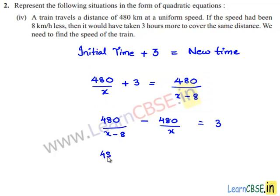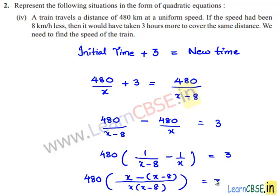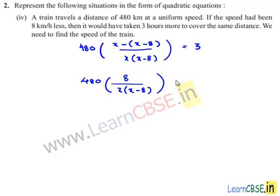Rearranging: 480 divided by (x minus 8) minus 480 divided by x equals 3. Taking 480 as common: 480 times (1/(x minus 8) minus 1/x) equals 3. The LCM is x times (x minus 8), giving 480 times (x minus (x minus 8)) divided by x(x minus 8) equals 3. Simplifying the numerator: x minus x plus 8 equals 8, so 480 times 8 divided by x(x minus 8) equals 3.